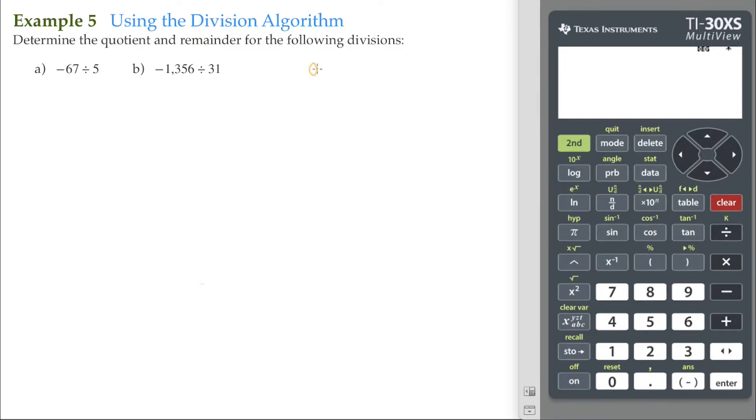We have to remember A equals Q times B plus R. That's the division algorithm. A, Q, B, and R all have to be integers. Another thing to check: our remainder has to be greater than or equal to zero but less than our divisor.